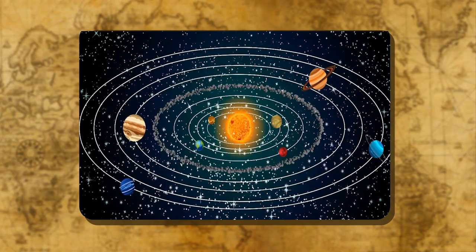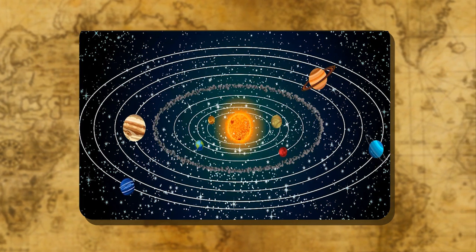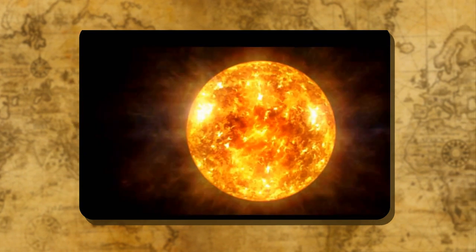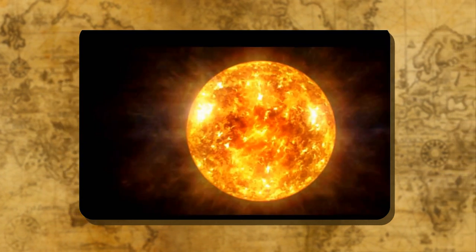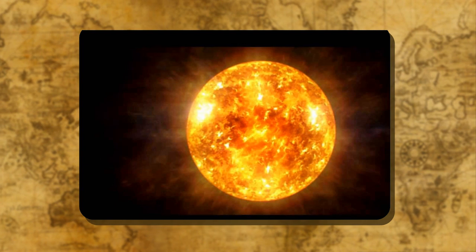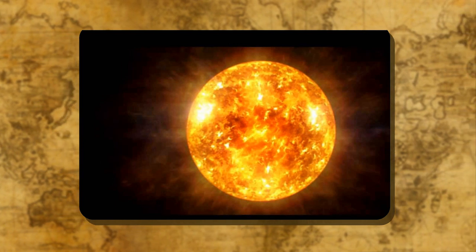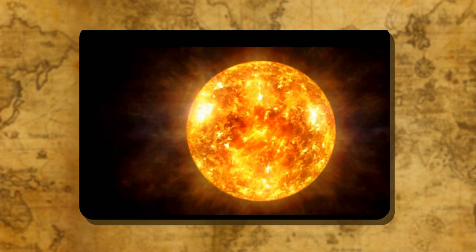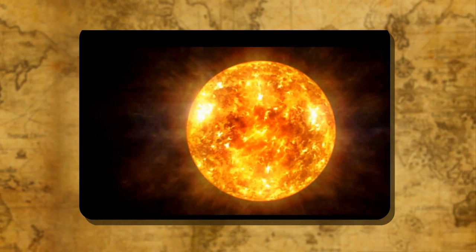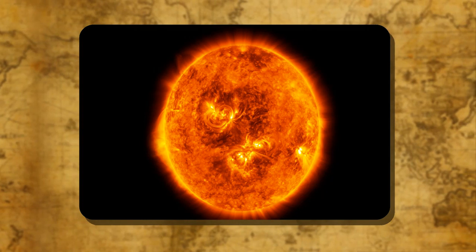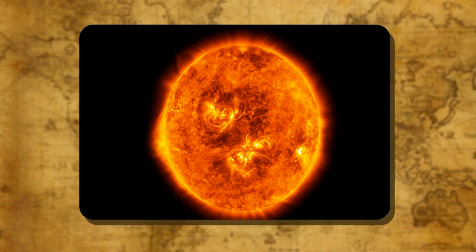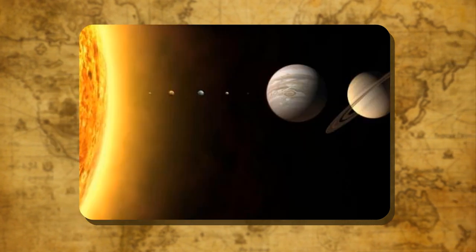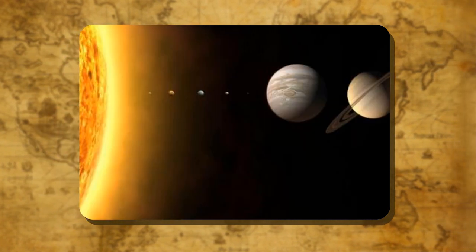The Sun: The sun is at the center of the solar system, around which the earth and other planets revolve. The sun is the ultimate source of heat and light for the solar system. Light from the sun takes about eight minutes to reach Earth. The temperature at the center of the sun is estimated to be about 15 million degrees Celsius, and at its surface the temperature is about 6,000 degrees Celsius.